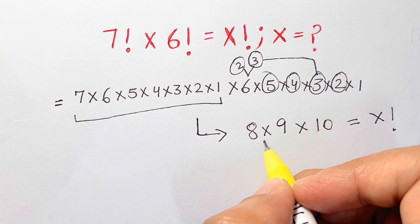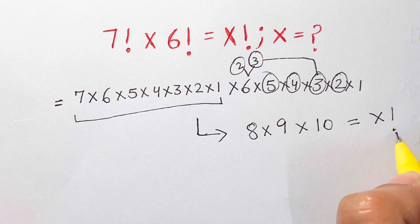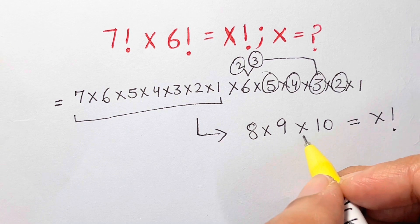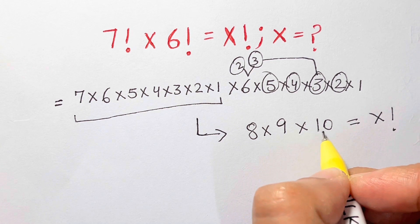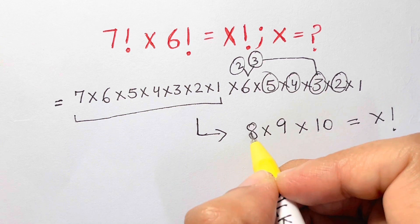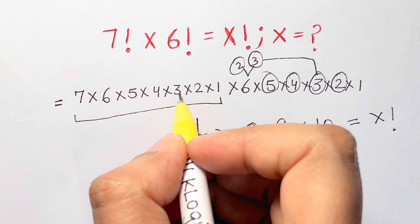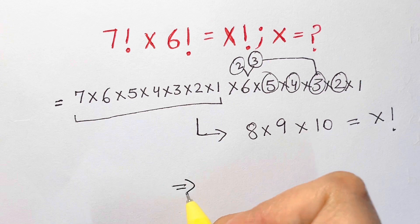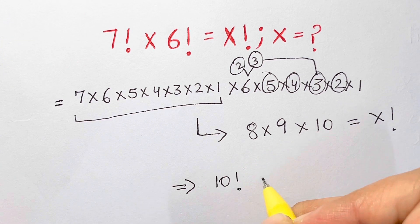thing—8 times 9 times 10—gives x factorial. Now, if you see, we have started from 10, then reduce it to 9, 8, 7, 6, 5, 4, 3, 2, 1. That's equal to 10 factorial, which is equal